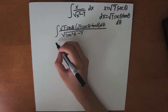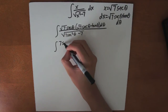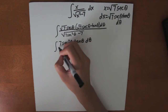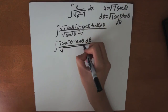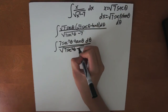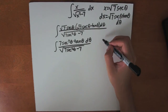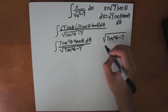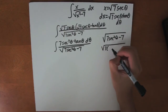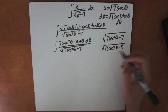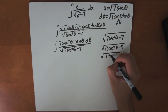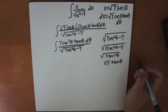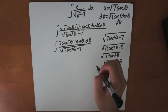Now let's simplify this integral. The numerator becomes 7 secant squared theta tangent theta d theta. For the square root in the denominator: the square root of 7 secant squared theta minus 7 equals the square root of 7 times the square root of secant squared theta minus 1. Using the identity secant squared theta minus 1 equals tangent squared theta, this becomes the square root of 7 times tangent theta.